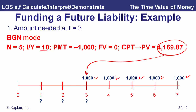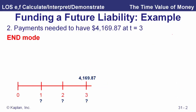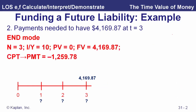Now the question becomes: what deposits do we have to make for three years in order to have $4,169.87 in the account at time three? We go back to end mode: N equals three, interest rate is 10%, present value is zero — nothing in the account to start. We find that deposits of $1,259.78 made at the end of each of the three years, earning 10%, will accumulate to the $4,169.87 needed to fund those five $1,000 withdrawals.